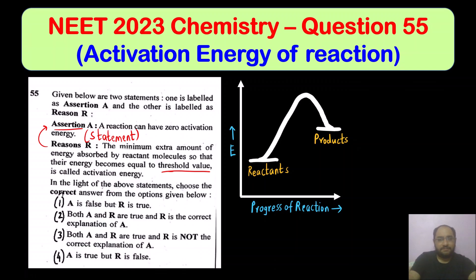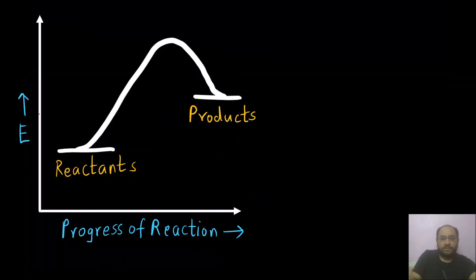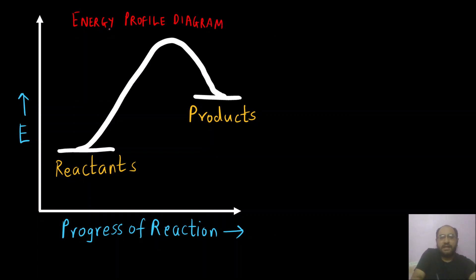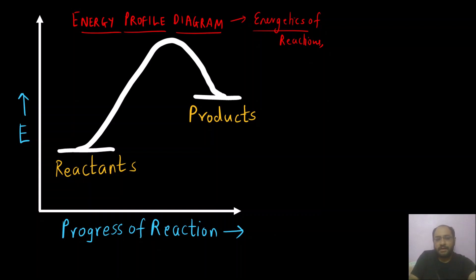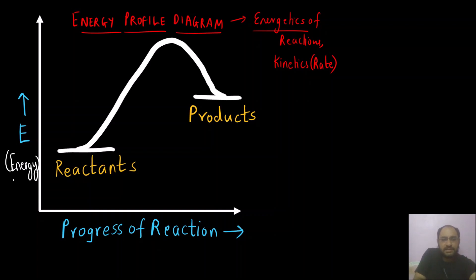This is the energy profile diagram that we are going to understand to solve this question. By studying the energy profile diagram, we can understand the energetics of the reaction as well as the rate of the reaction. Energetics means energy associated with the reactants and products. The energy profile diagram is a plot of potential energy of the reactant and product on the y-axis, and progress of the reaction — also called reaction coordinates — on the x-axis.